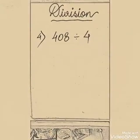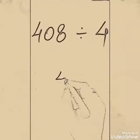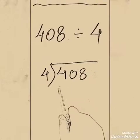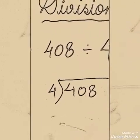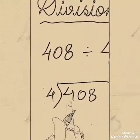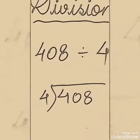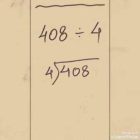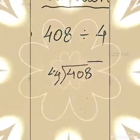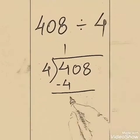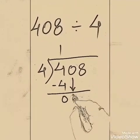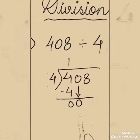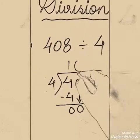Last sum of the day: 408 divided by 4. Write 408 in the middle, 4 outside. Now start our inspection. 4 is equal to 4. So say the table of 4 — if the first digit is less than 4, only then we put a 0 and take 2 digits together. But if it is equal to or greater than the divisor, you will see the table of 4. 4 ones are 4. 4 minus 4 is 0. Bring the second digit down, which is again 0. Now 0 is less than 4, so whenever a number is less than the divisor, put a 0 on top of it.